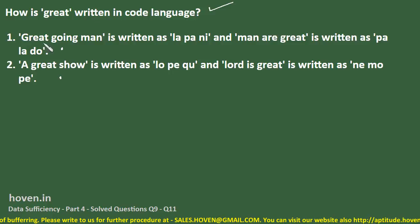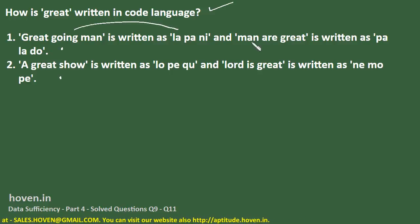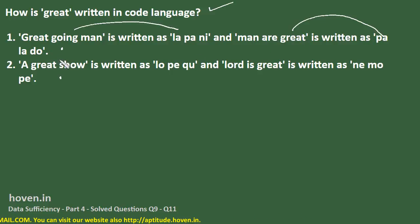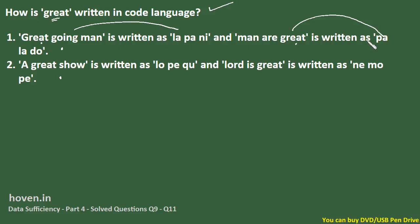So 'great going man' — these three words are written as 'la pa ni'. Similarly, the code for 'man are great' is 'pa la do'. We have to find how 'great' is written. We can see 'great' appears in both statements, so one of the code words must be common.